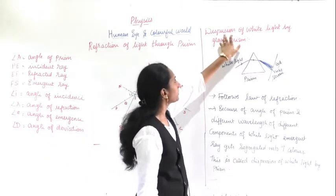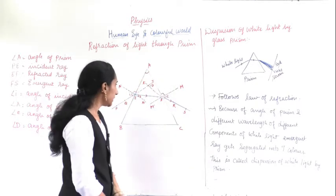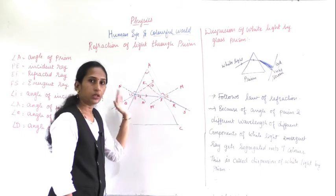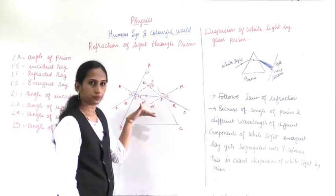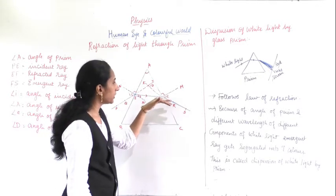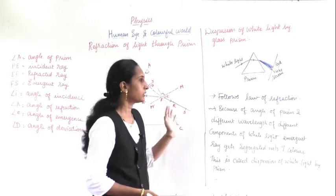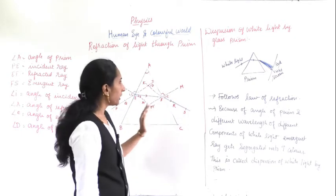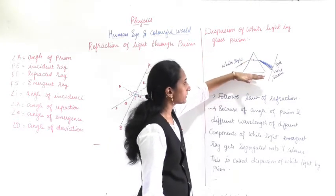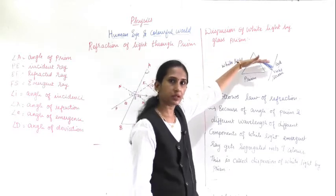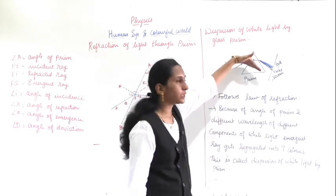The next topic is dispersion of white light by a glass prism. When light enters into the prism it goes from a rarer to a denser medium, so the light bends towards the normal. When it emerges out, it bends away from the normal. White light is passed through the prism, it enters from the rarer medium to the denser medium, and the light bends a little.